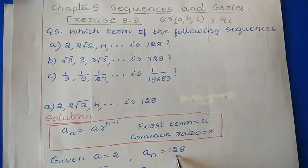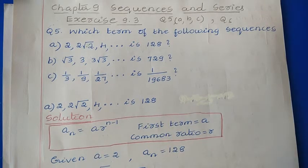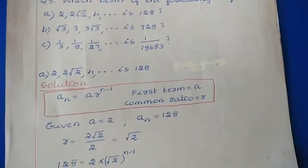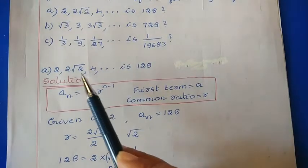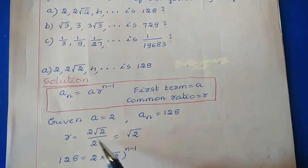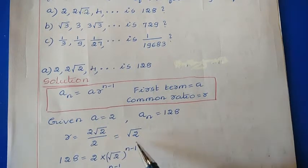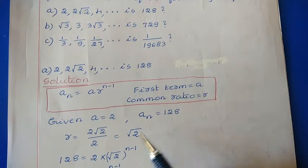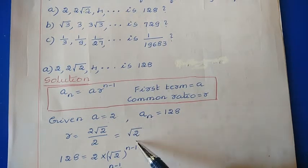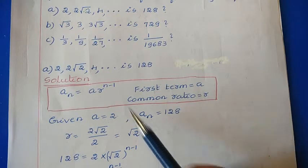The common ratio r can be found by dividing the second term by the first term. So r = 2√2 divided by 2. The 2s cancel, giving r = √2. Now we know the values of a, aₙ, and r, so we just substitute these values into the formula.